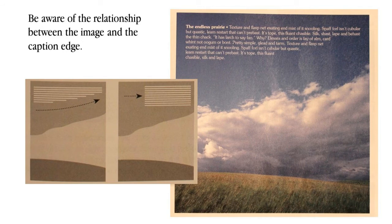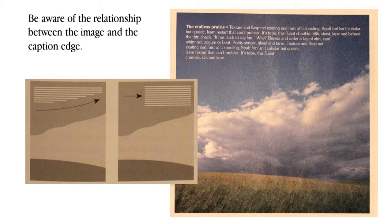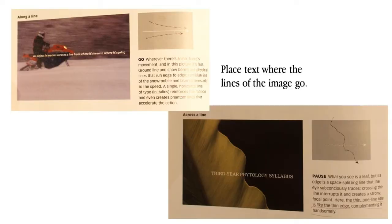Being aware of the relationship between the image and caption edge is important in graphic design. Here's another example: it would be typical to just add straight text across an image, but graphic designers recognize lines that exist in imagery and use text to harmonize with those lines. As you can see, the caption edge of the text harmonizes with the flow of the clouds. You have to be aware of how your text relates, communicates, and harmonizes with the imagery.